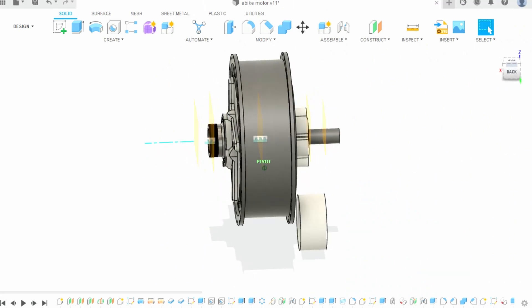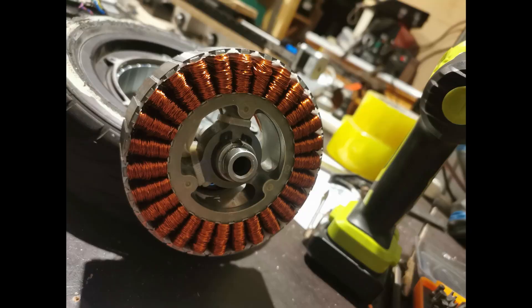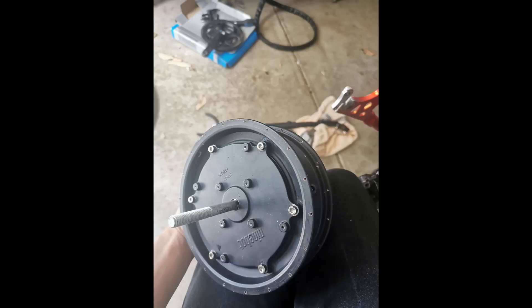The motor and critical bike dimensions were modeled in CAD to assist designing parts. The shaft was extended to both sides by opening up the motor and welding a bolt onto the stator.